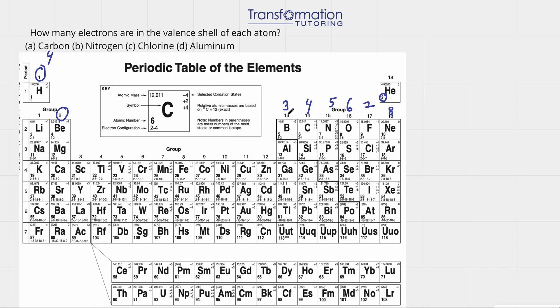Some periodic tables say 13, 14, 15; some just say 3, 4, 5. Just remember to not use the 10. Now we have nitrogen. Nitrogen is in group 15, so it will have five valence electrons.